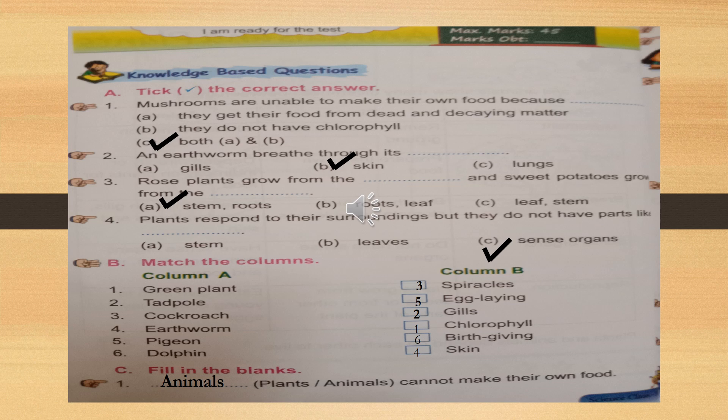When cockroach or insects breathe, they use spiracles. Near the spiracle, you want to put 3. Check your answer children. Fourth one — earthworm. Earthworm uses skin to breathe. Write 4 near skin. Check your answer.